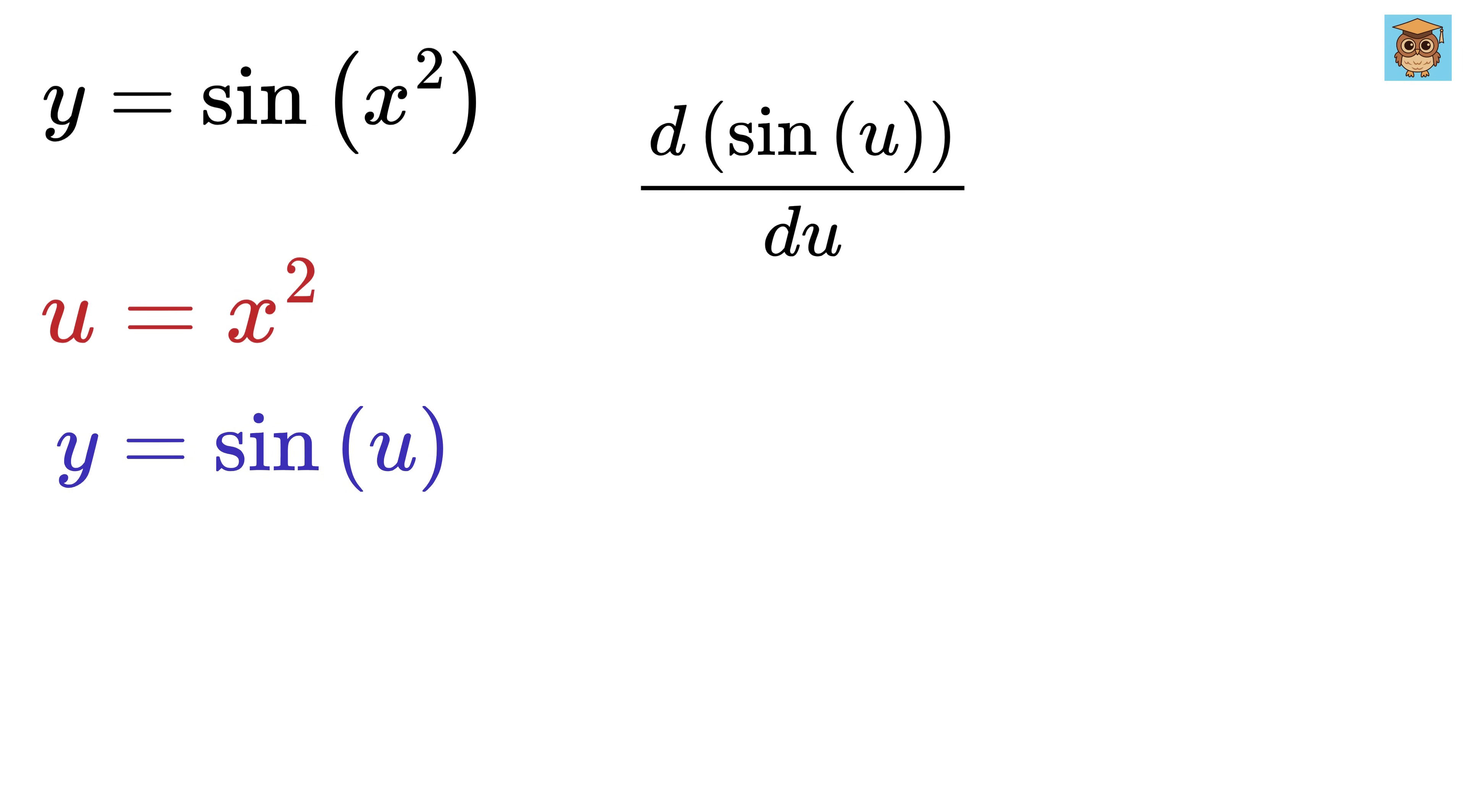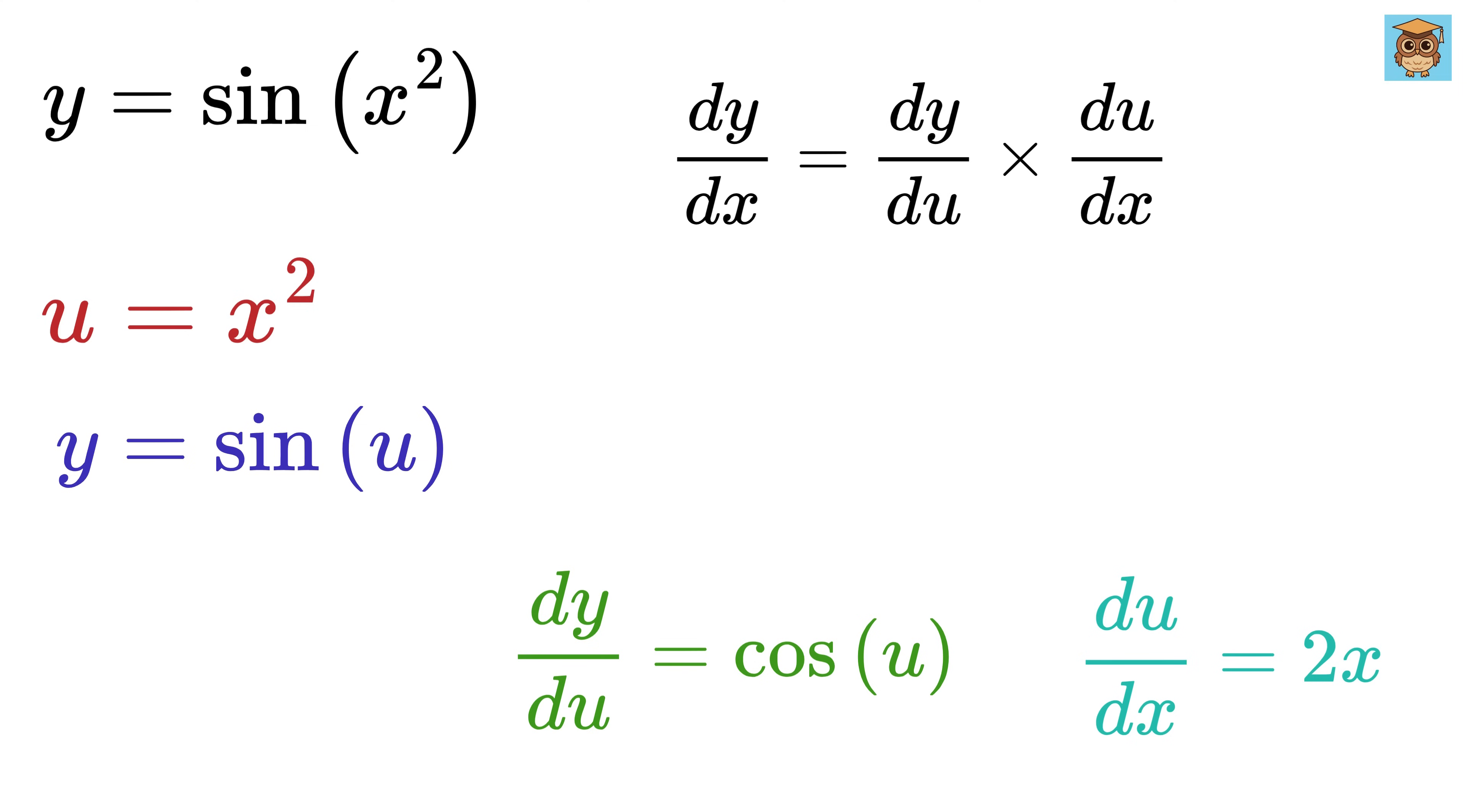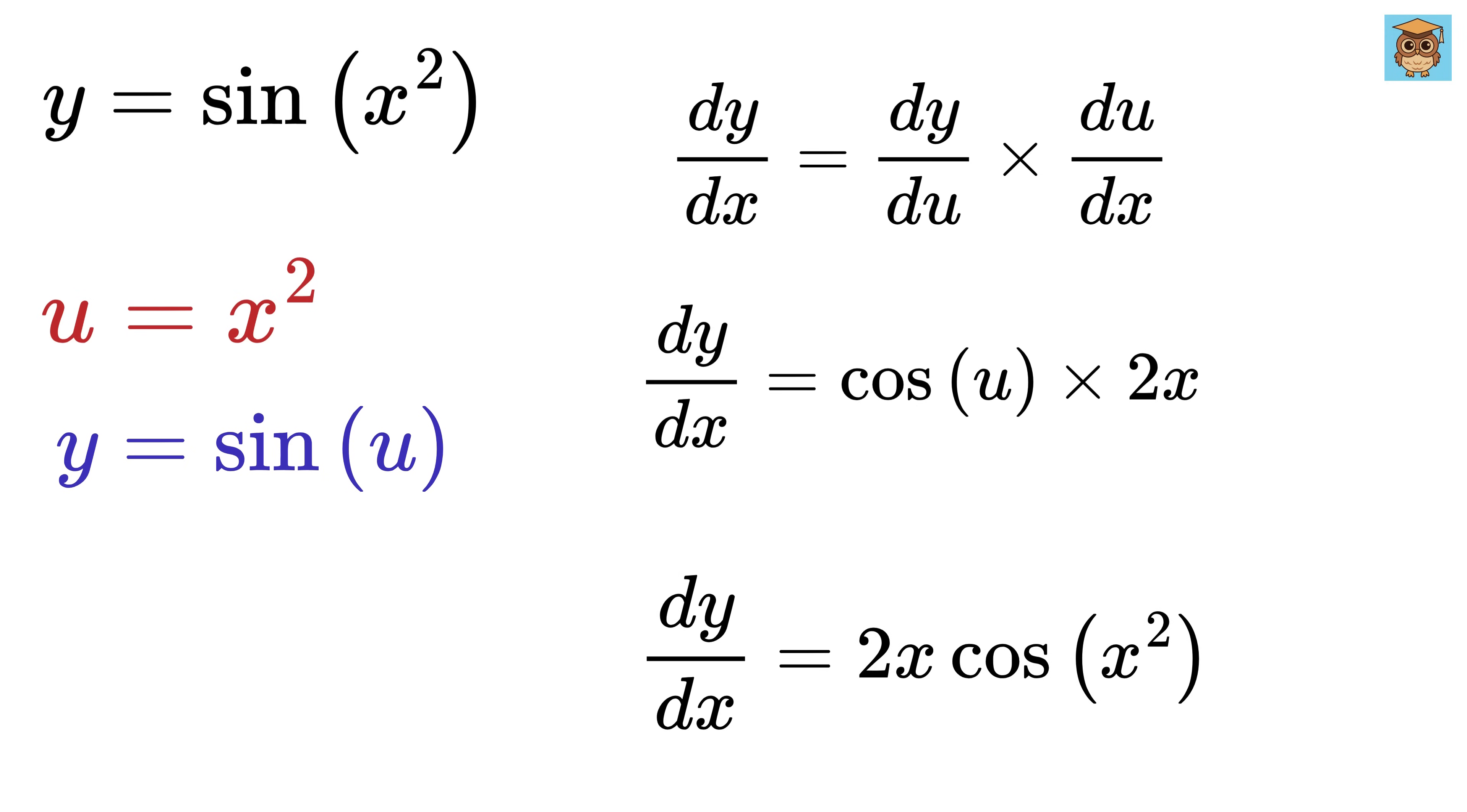Now, we differentiate each part separately. The derivative of sine u with respect to u is cos u, so dy by du equals cos u. Next, the derivative of u with respect to x is the derivative of x square, which is 2 times x. Now, we apply the chain rule which tells us that dy by dx equals this multiplication. Substitute them to get cos u times 2x. But remember, u was just a temporary variable we used to simplify things, so we substitute it back. Since u equals x square, the final answer becomes dy by dx equals 2x times cos of x square. That's how we use the chain rule to easily find the derivative of a function like sine of x square.